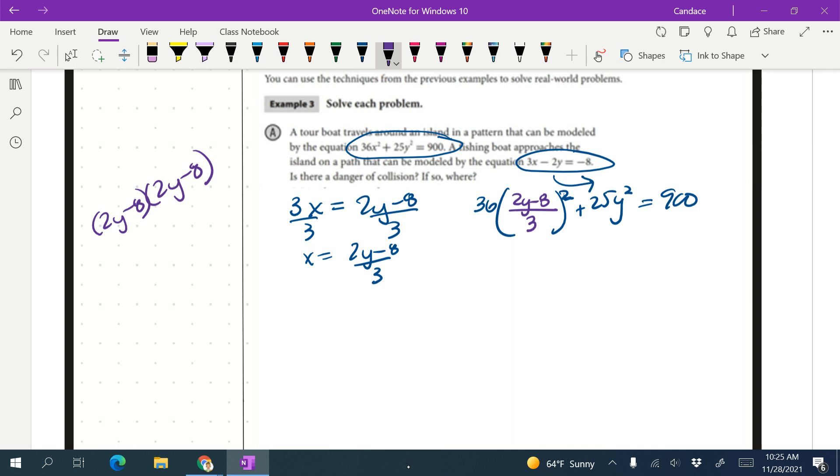So 2y times 2y is 4y squared. 2y times negative 8 is negative 16y, and I have that again in the middle. And then negative 8 times negative 8 is positive 64. So if I were to combine that together, I would have 4y squared minus 32y plus 64. And then in the denominator, we know that 3 squared is 9.